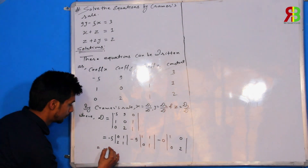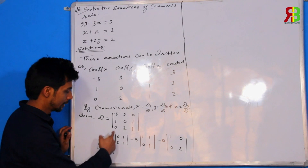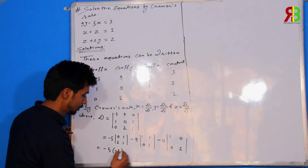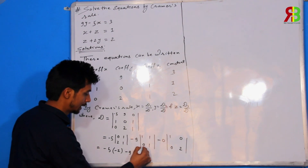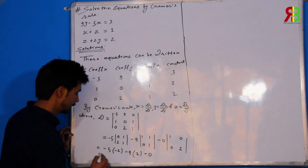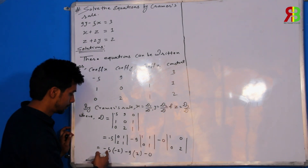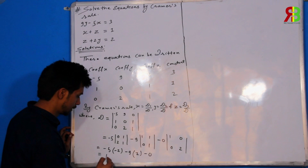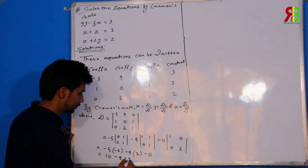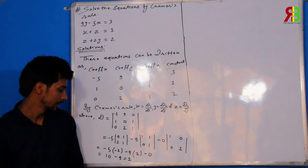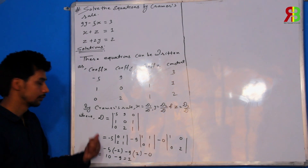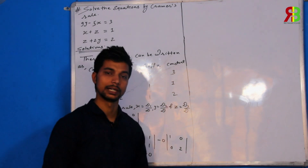I will solve. Minus 5, 0 minus 2, minus 2, minus 9. 1 minus 0. 1 is 0. What do you do? Minus 5 into minus 2. 10 minus 9 equals to 1. 5, 2 is 10, minus minus plus. So it is minus 9. So 1 is 0. 0 is 0. Determinant 0 is 0.